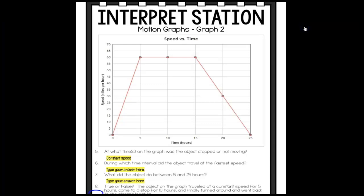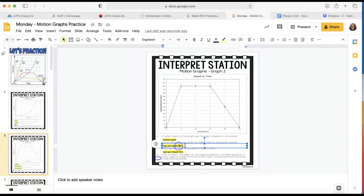For number 6, it says during which time interval did the object travel at the fastest speed? We have to figure out, looking on the side at your y-axis, find the highest number that the object went to. So the fastest it got to was 60 miles per hour, and that happened between 5 and 15 hours. So that is the time interval the object went the fastest. I'm going to type 5 to 15 hours.